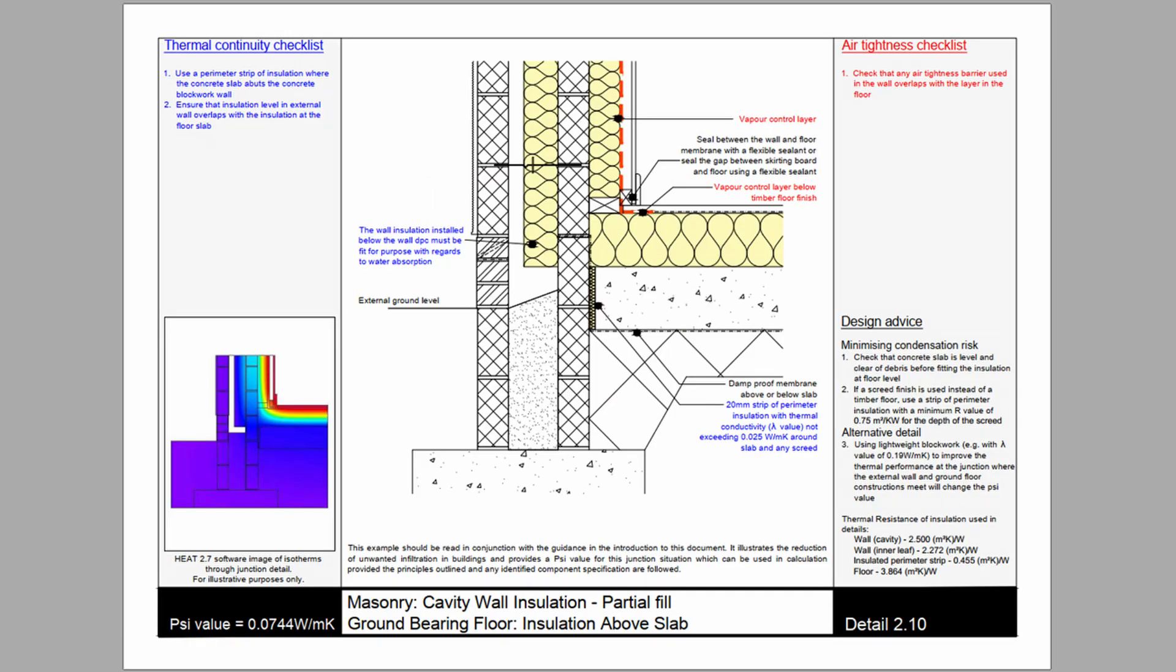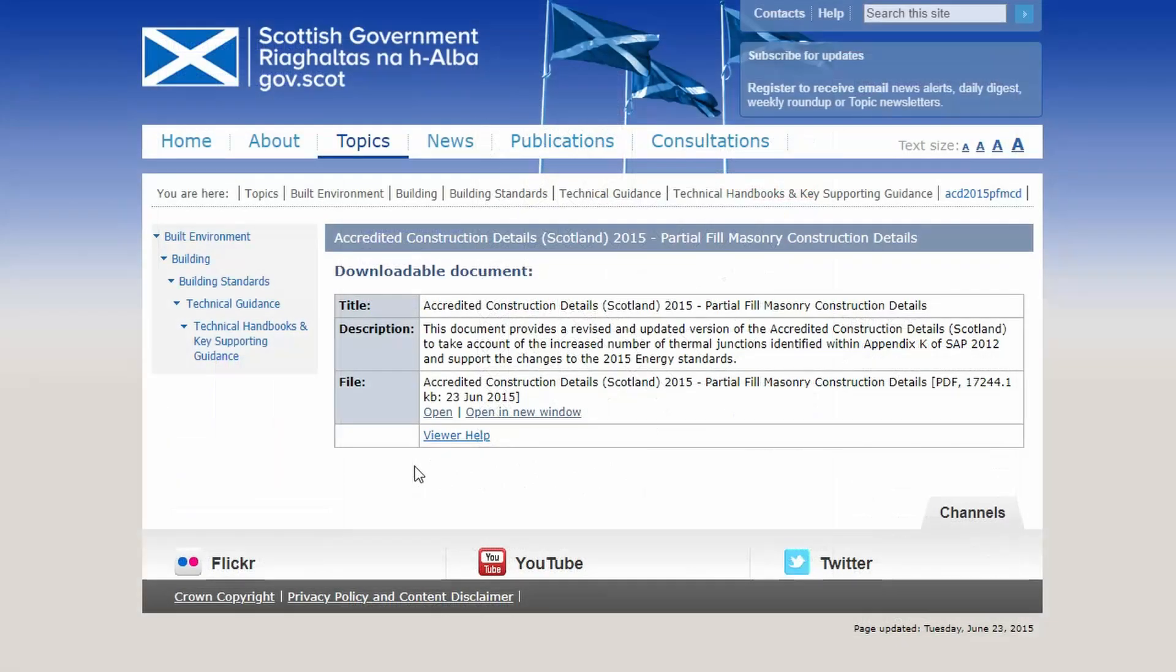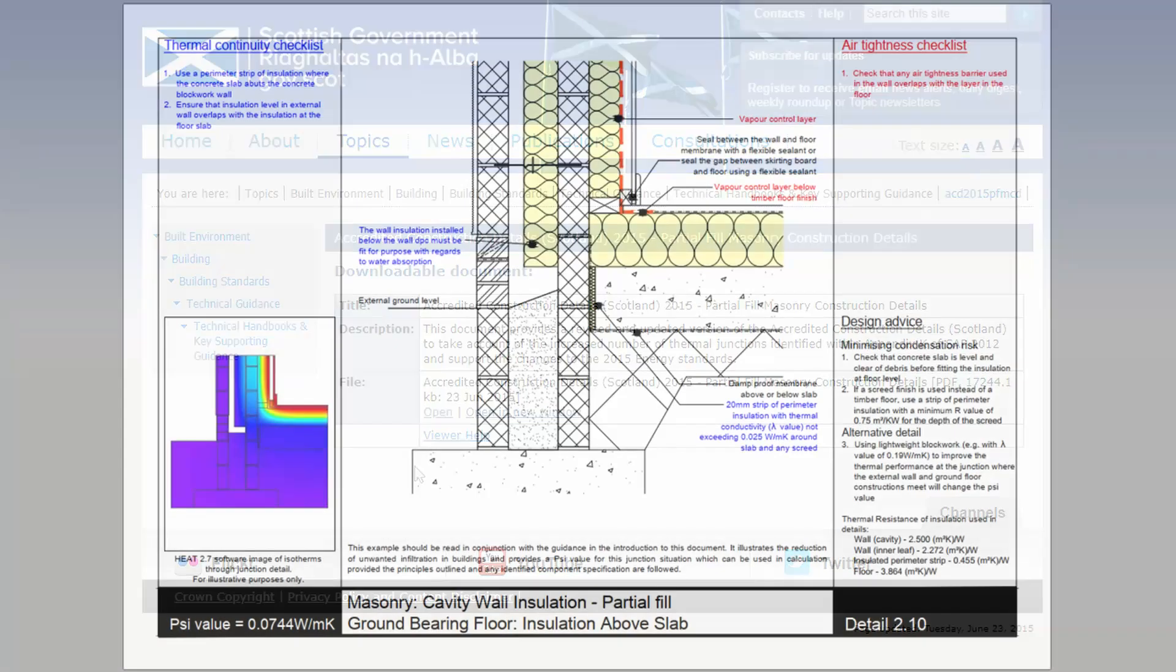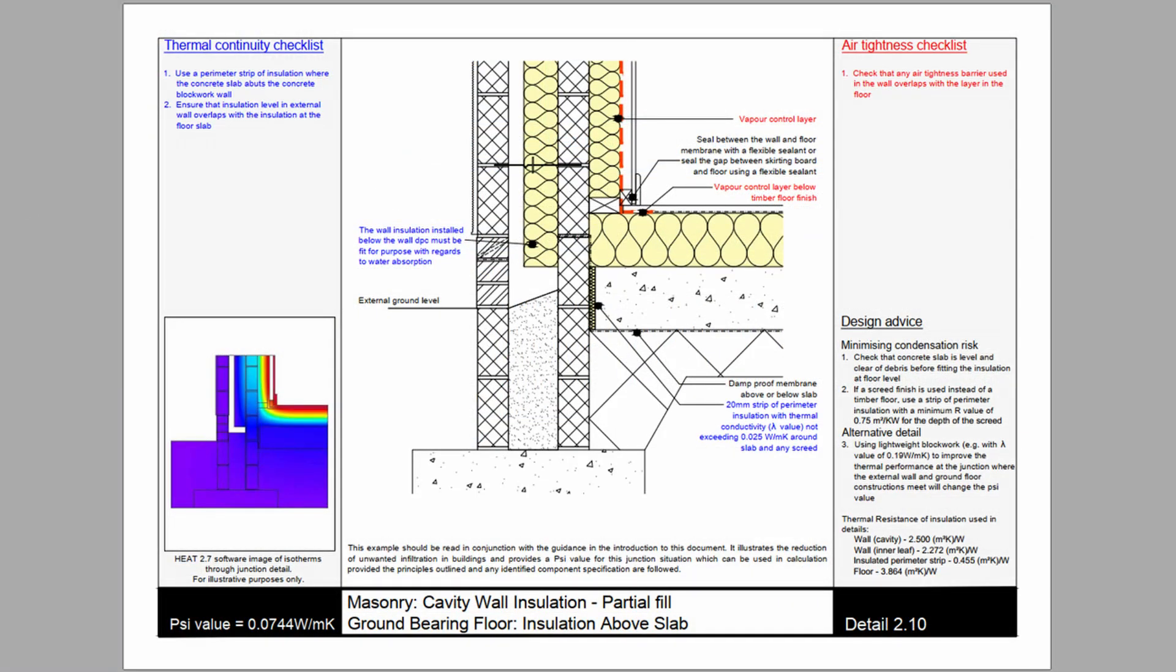There are a number of resources we can use to tell us a little bit about what's expected of a cavity wall. This detail is from a document produced in Scotland called the Accredited Details, which covers a number of different types of construction. We can see a foundation detail for a partial fill cavity wall. This detail has insulation internally. What we're going to look at today is a similar detail, step by step, without the internal insulation.